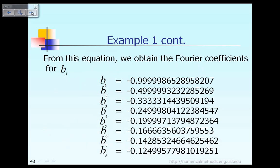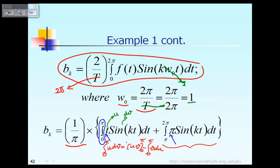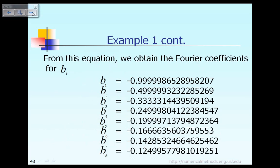Evaluating the first and second integrals for the Fourier coefficient b sub k, we can let k equal 1, 2, up to 8, and calculate b1 through b8. For example, b1 is equal to almost minus 1, b2 is almost equal to minus 0.5, and so on, with b8 equal to minus 0.1249957.